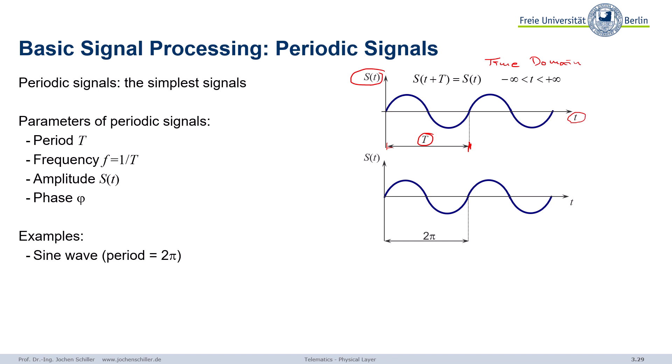We can also specify a bit more. We can have something called a phase. You see here a sine wave with a certain period 2π, and we can shift the phase φ. That indicates the displacement of the sine wave, as seen in the second example. You can represent something by the amount of shifting a sine wave compared to the unshifted sine wave.